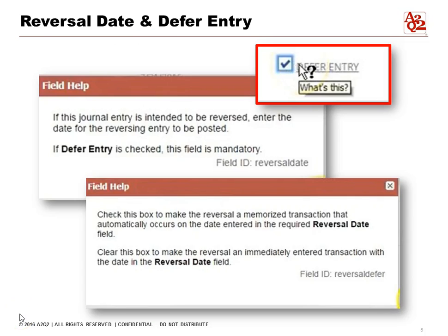So what is a reversal date and what is a deferred entry? When you click into the help field, it explains what a reversal date is. It says: if this journal entry is intended to be reversed, enter the date for the reversing entry to be posted. So that's simple enough — enter the date.